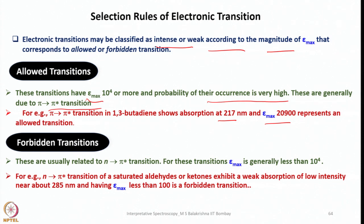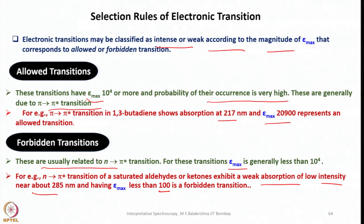For forbidden transitions, ε_max is generally less than 10⁴. For example, n→π* transitions of saturated aldehydes and ketones exhibit weak absorption near 285 nm with ε_max less than 100. Not all theoretically possible electronic transitions are actually observed, because they are governed by selection rules that distinguish between allowed and forbidden transitions. Allowed transitions occur frequently; forbidden transitions do occur but are much less common and of low intensity.